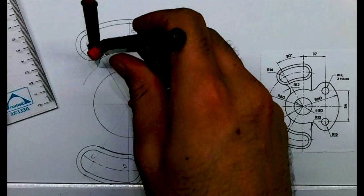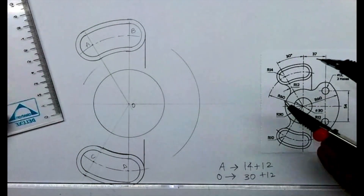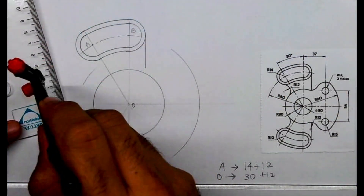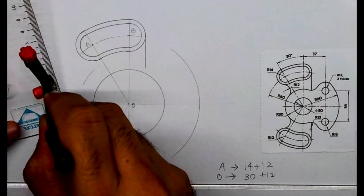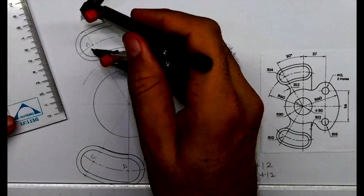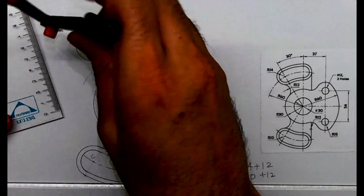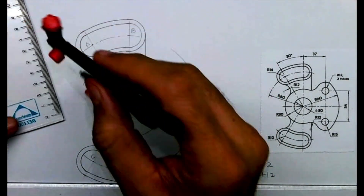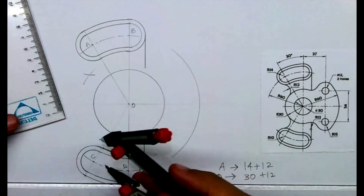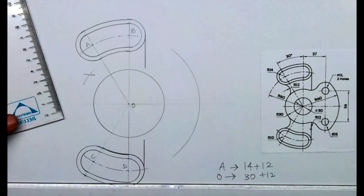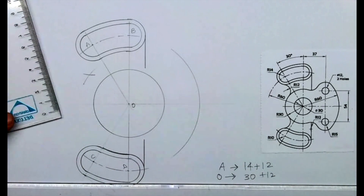From here you will draw 42 from O, and from A you will cut 26 — that is 14 plus 12. Wherever they intersect, from that point we can draw radius 12.